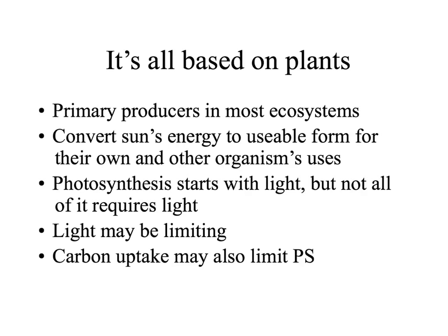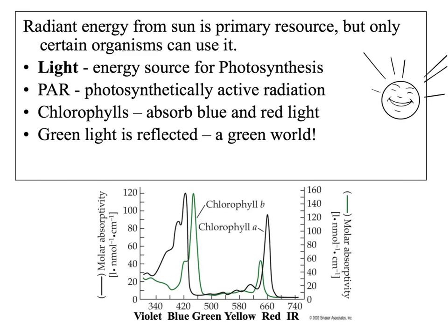Carbon uptake also can limit photosynthesis in certain situations. The sun puts out a lot of radiant energy, but only some organisms can use it. It makes us feel good to be in the sun and lie on the beach, but we can't incorporate it — we still have to eat. Certain wavelengths of light activate photons in plants and they're perceived by pigments. The chlorophylls and accessory pigments absorb red and blue light from the spectrum, and looking at the action spectrum, chlorophyll A and chlorophyll B have slightly different absorption spectra, but both absorb in the blue and red parts of the spectrum.